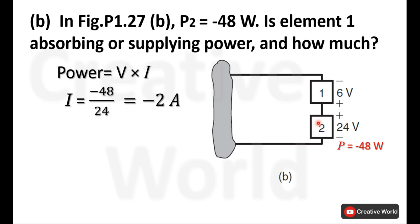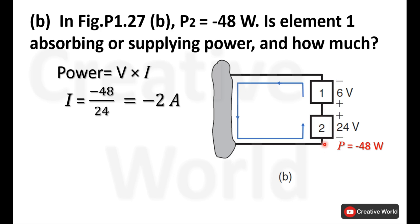This same current will also pass through element 1 because of the series connection, and the direction of this current is indicated by blue arrows. Now, how do we judge the direction of current? Element 2 is supplying power, and we know that in the case of supplying power, current should leave from the positive terminal of that element and enter from the negative terminal. So in element 2, current is leaving from the positive terminal and entering from the negative terminal, and the same direction applies to element 1.